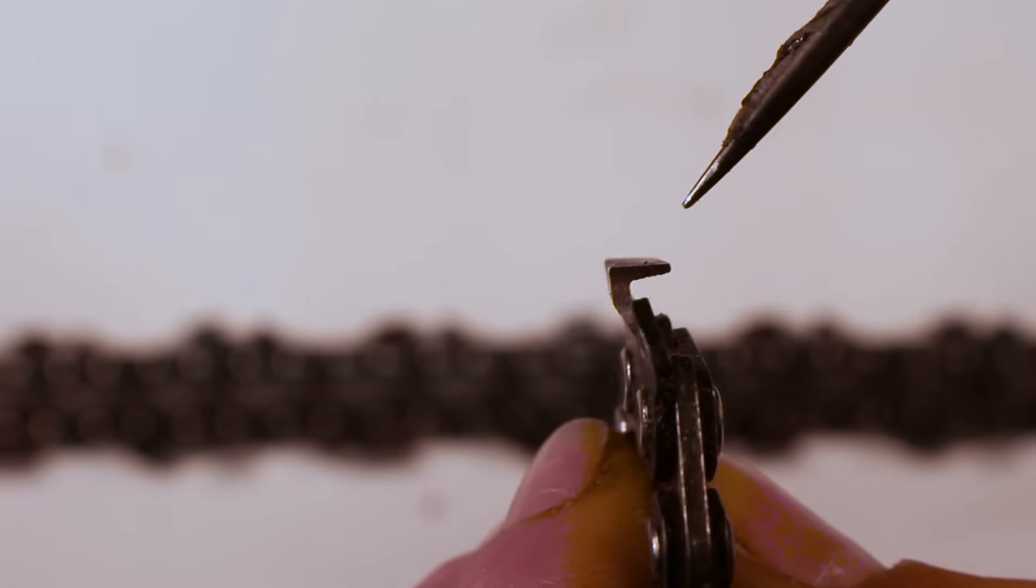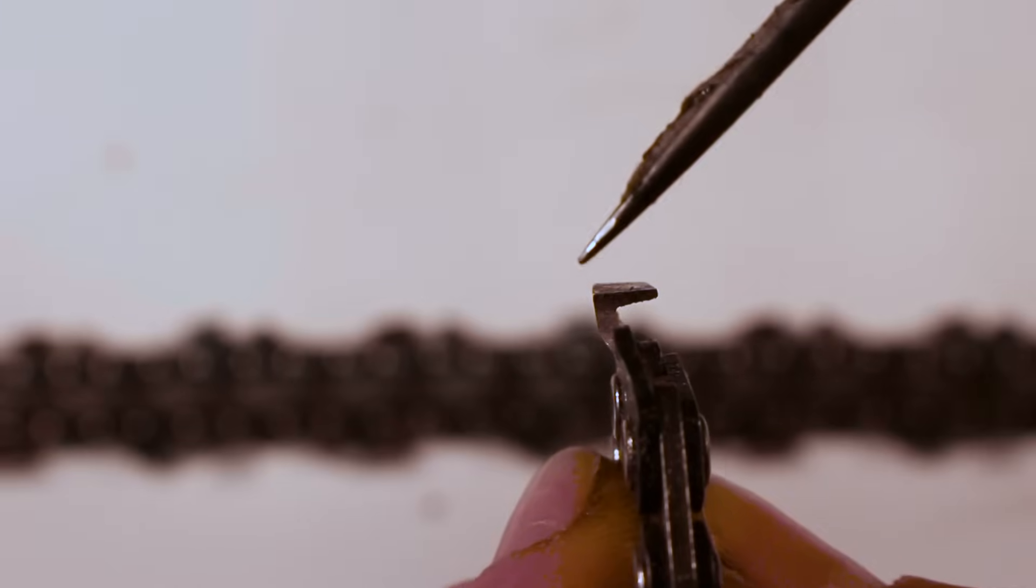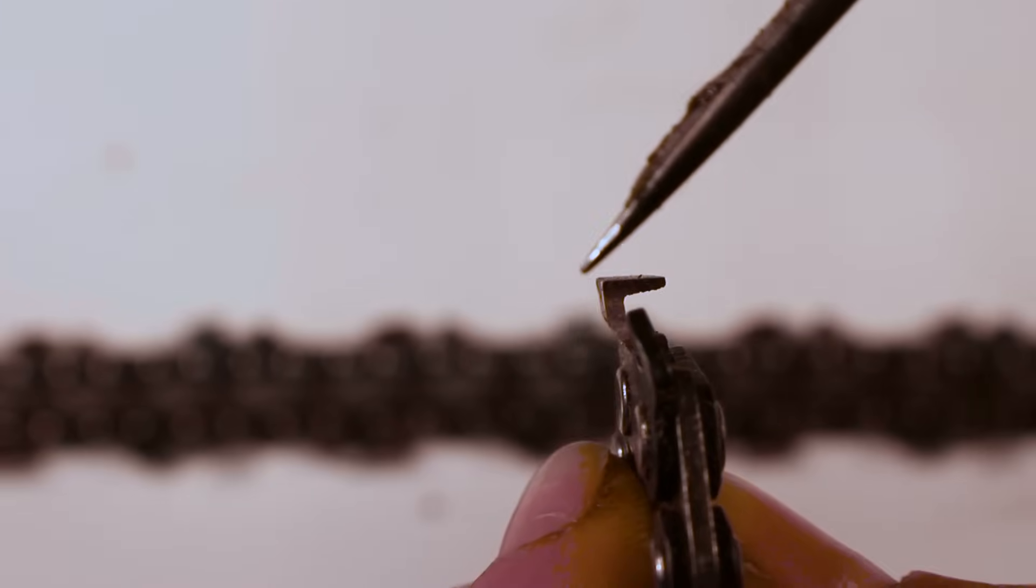Here's a head-on view of a full chisel chain. You can see right here that's a square corner, 90 degrees - that's a full chisel. And here we have a head-on view of a semi chisel chain. You see right here this corner is rounded.